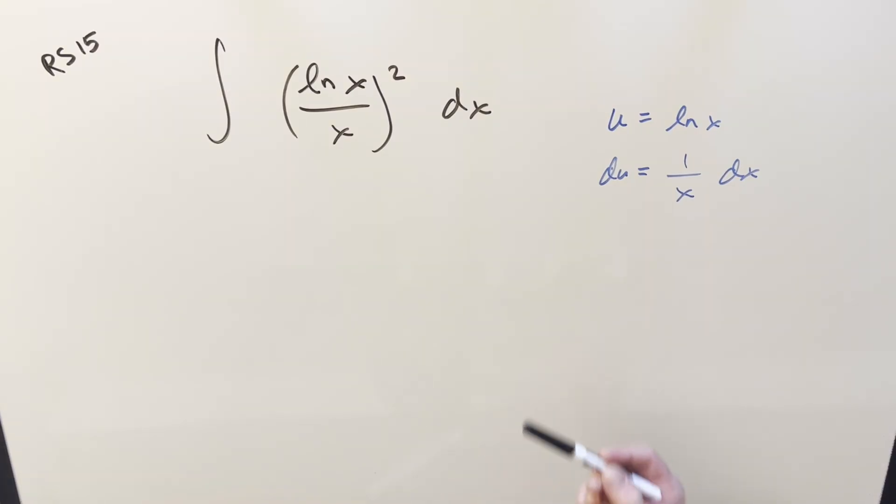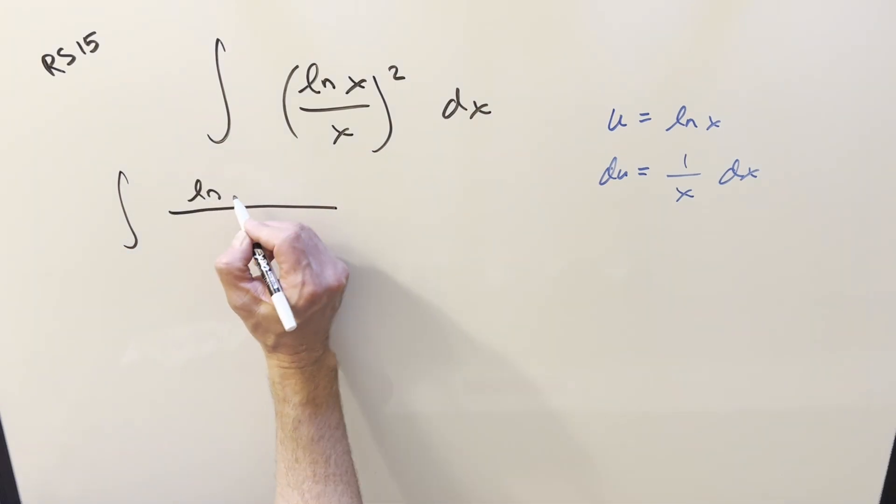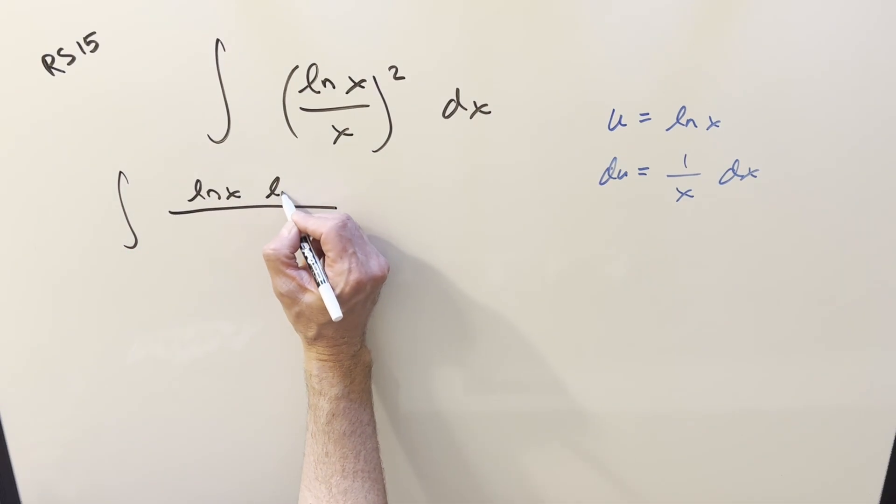But it's not immediately clear if it's going to work the same way. I think what I want to do is multiply it out, instead of writing it like this, write it like ln x times ln x.